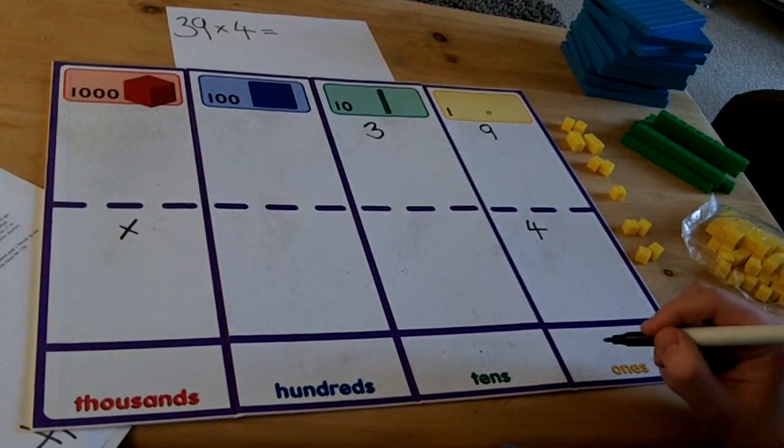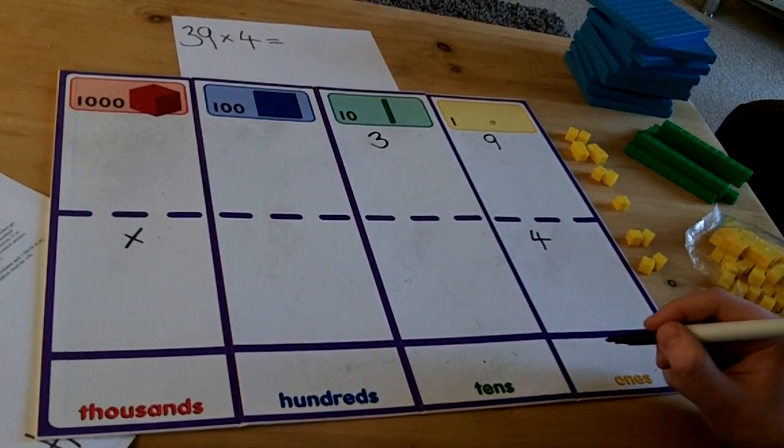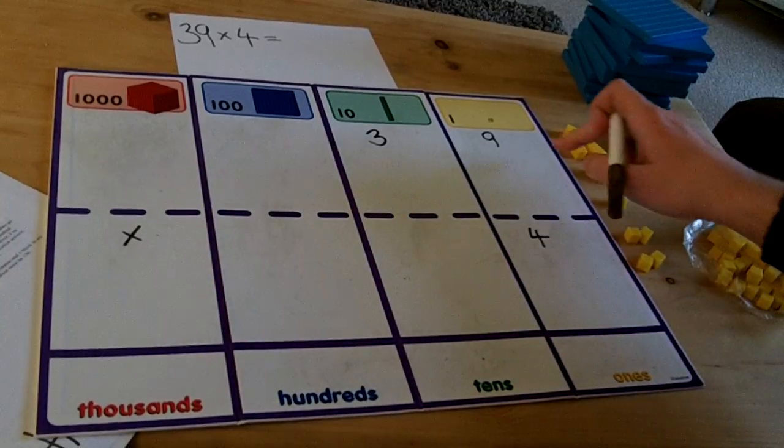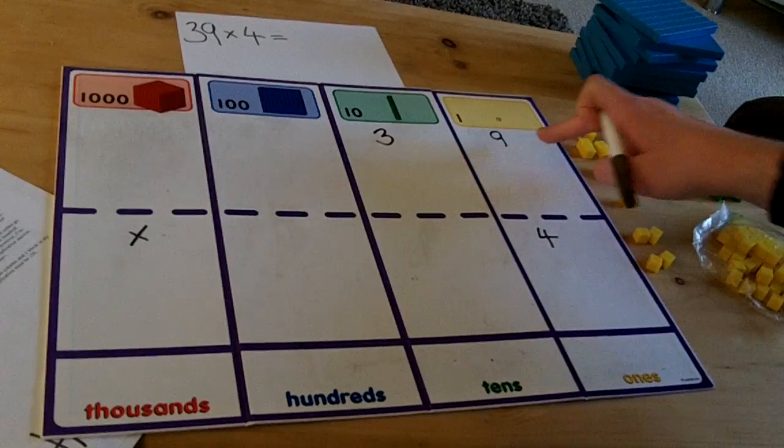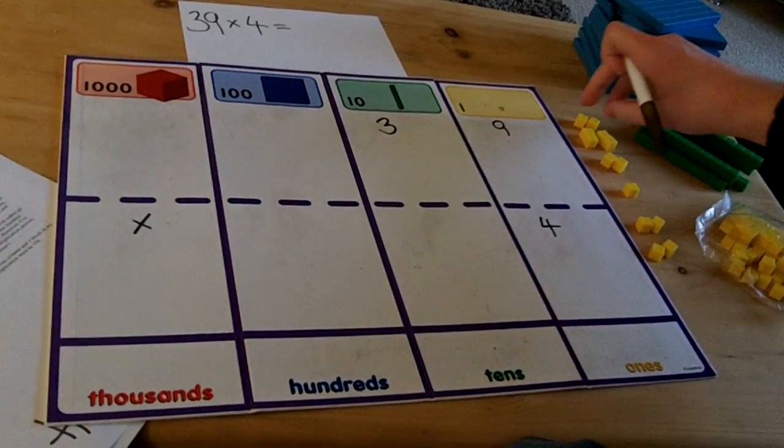As I am using Dean's Cubes I must put the correct cubes on the correct number, so in the ones column I have got 9 and 4. This means I must put 9 cubes on top of the 9 and 4 cubes on top of the 4.